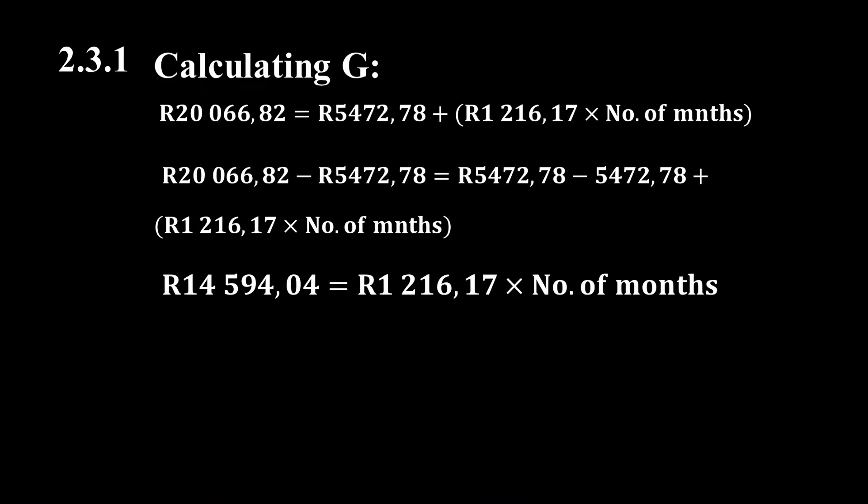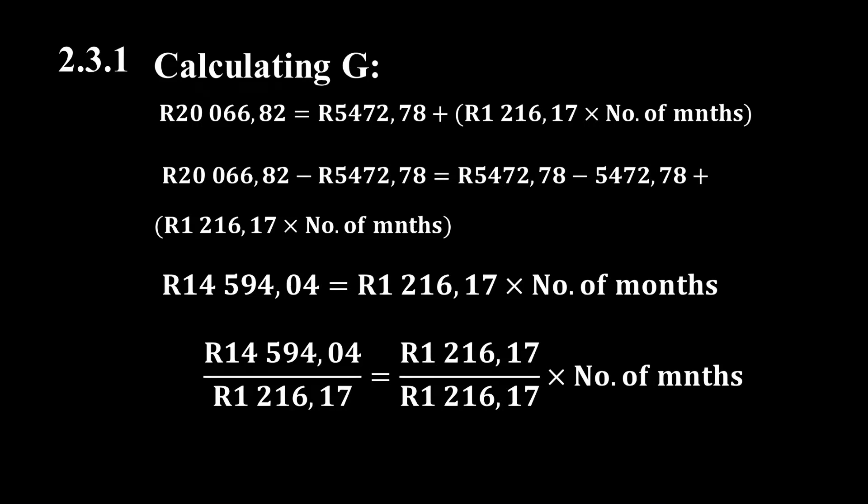The next step is to divide both sides of the equation by R1,216.17 to isolate the number of months. Simplifying gives us the number of months equal to 12. So G equals 12 months.